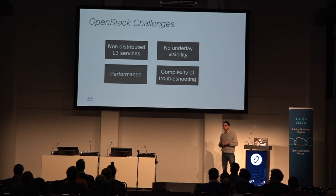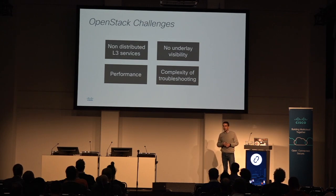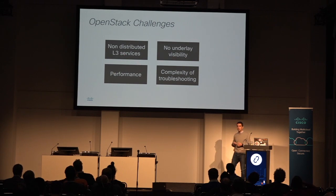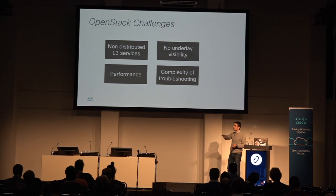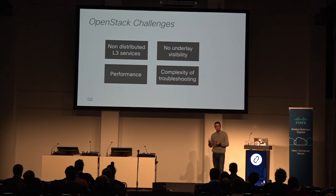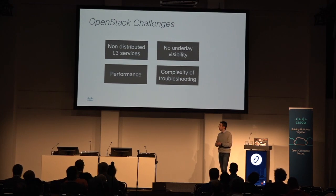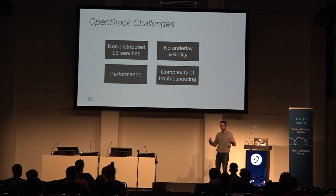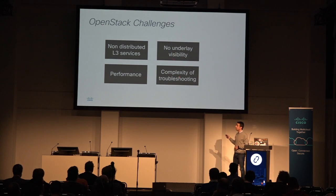Now, why are we here? When talking with customers about OpenStack, we see a number of networking challenges. Distributed layer 3 services are typically a challenge — while there is some distributed virtual routing, more advanced features like NAT, floating IP, or other service insertion make distributed network services non-trivial in OpenStack. Performance — especially important in the NFV world — is also sometimes a challenge, together with visibility and complexity of troubleshooting, because you focus on the overlay with minimal visibility into the underlay switching layer.